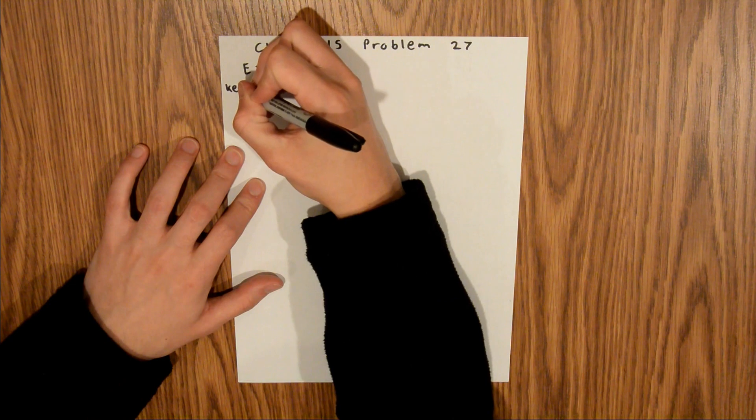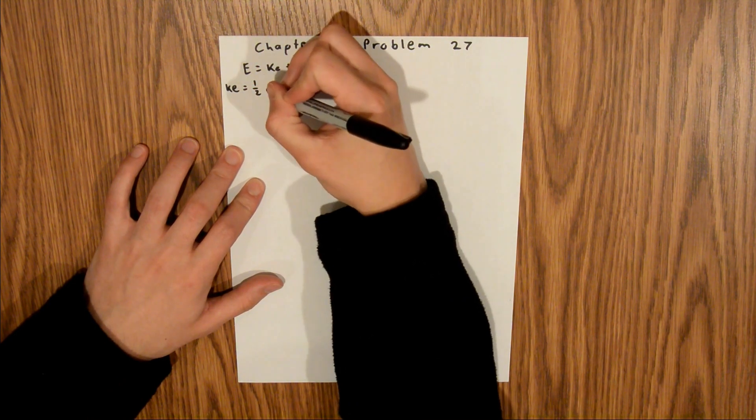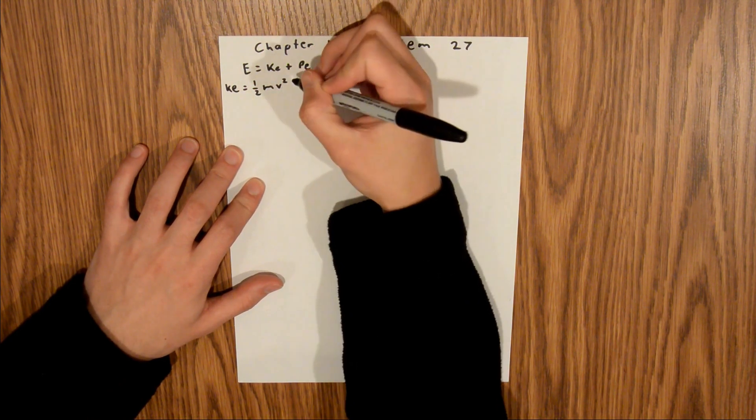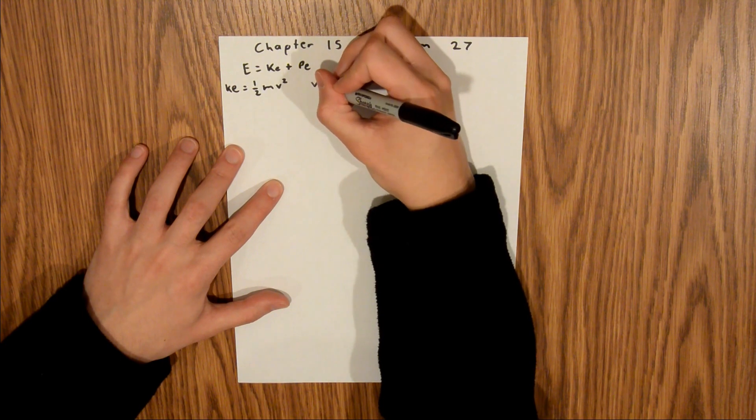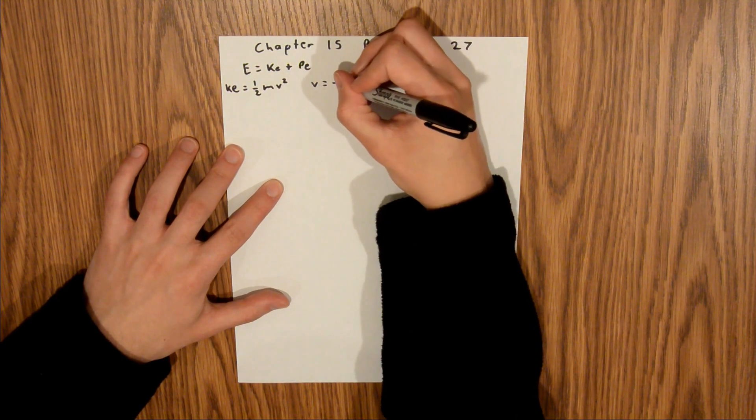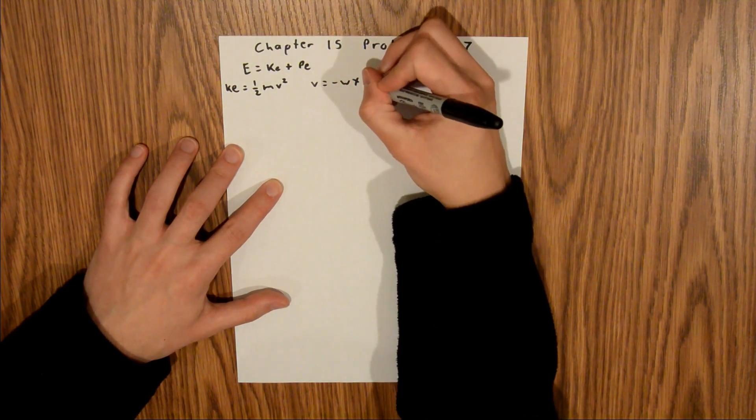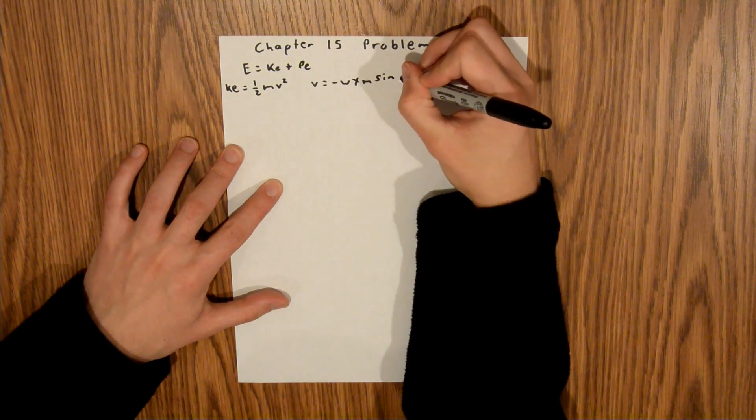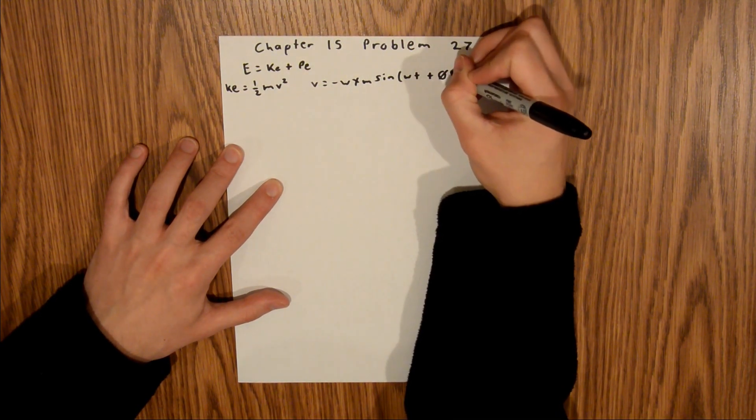So KE is equal to 1 half mv squared, where v is equal to negative omega xm sine omega t plus phi.